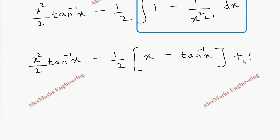We can also multiply this minus half inside so it is x square by 2 into tan inverse x minus x by 2 plus half tan inverse x plus c.